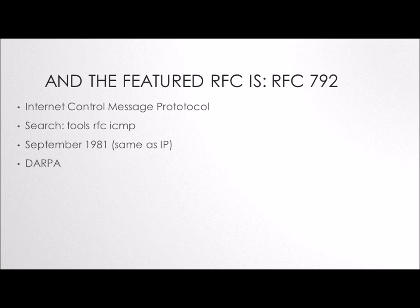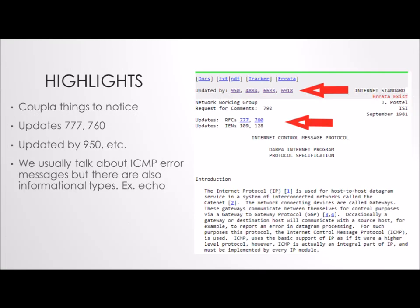Also from DARPA research, this one dates from the early days. Here are a couple of things to notice that are particularly prevalent in this RFC. This RFC not only updates other RFCs, but is updated itself. In this particular RFC, it updates 777 and 760, and of course it is updated by RFCs that came later. This one dates from 1981, so you can imagine that back in those early days, they couldn't think of everything, and some of the ideas that started off maybe didn't carry forward.